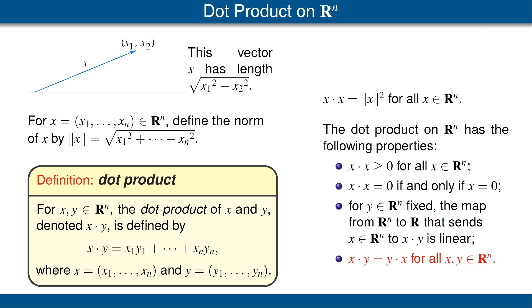Note that the dot product of two vectors in Rn is a number — it's a real number. The four properties of the dot product on Rn, shown in the four bullet points here, are almost what we want to abstract to get to the notion of inner product. In fact, this works perfectly on real vector spaces, but for complex vector spaces, there's a little bit of a wrinkle that we need to consider first.